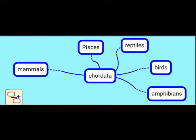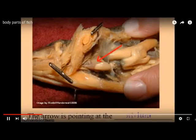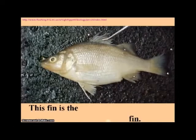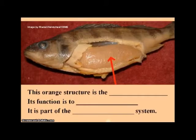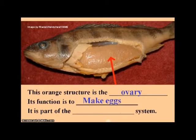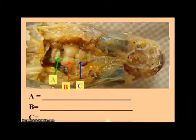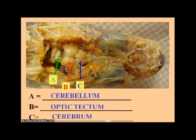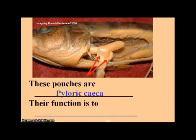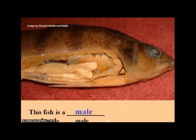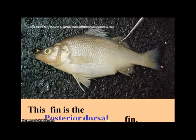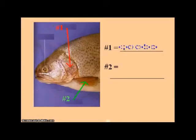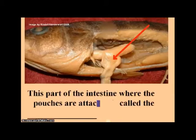In the Chordata mind map, we can see mammals, fishes, reptiles, birds, and amphibians. The labeled parts include gills, fins, intestine, ovary, cerebellum, optic tectum, cerebrum. This fish is male. These fins are the posterior dorsal fins, operculum, and pectoral fins.